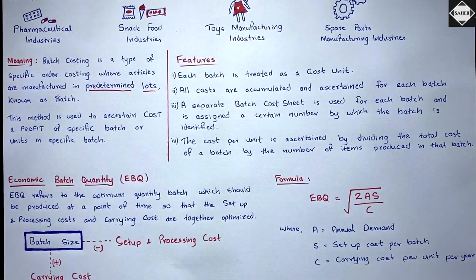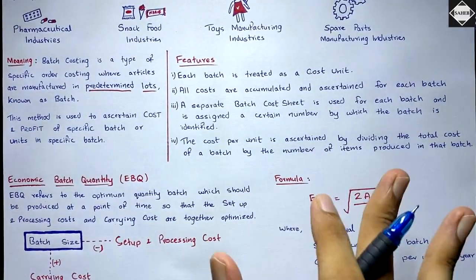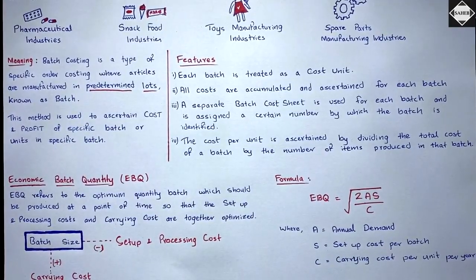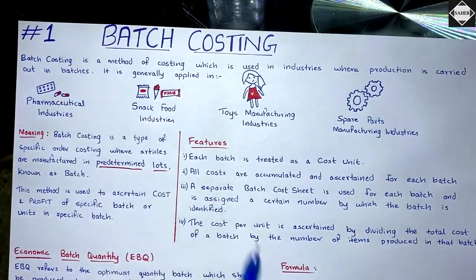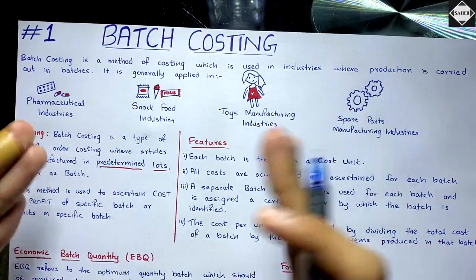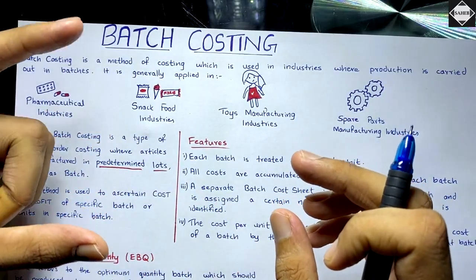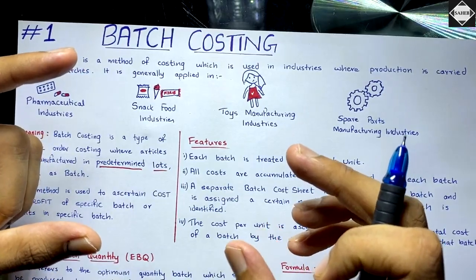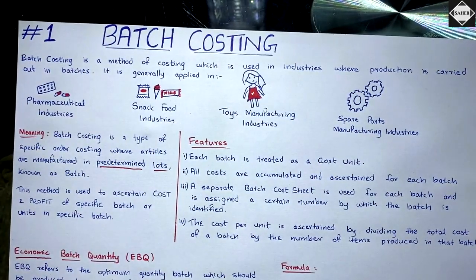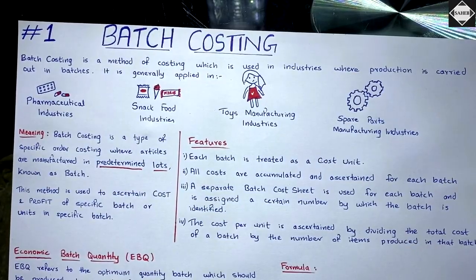In EOQ (Economic Ordering Quantity) we had carrying cost and ordering cost. In EBQ we don't have ordering cost — instead we have setup and processing cost, because to manufacture each batch the machinery must be prepared. As the number of batches increases, setup and processing cost increases — the same logic as EOQ where more orders meant higher ordering cost.